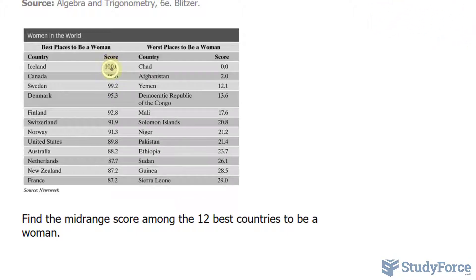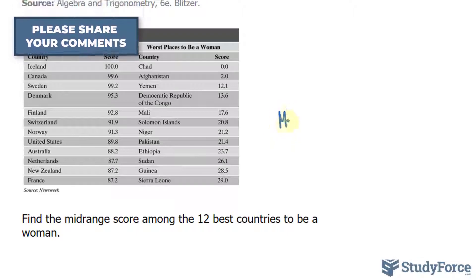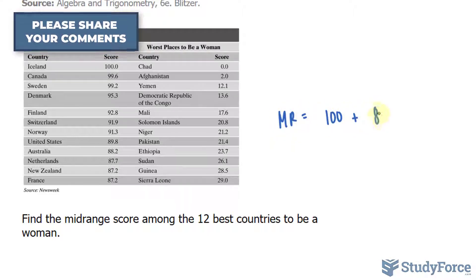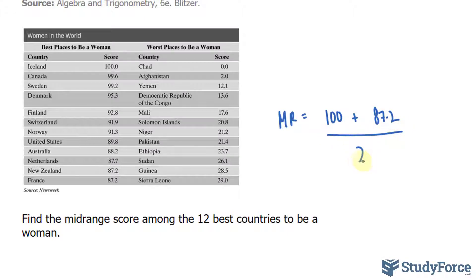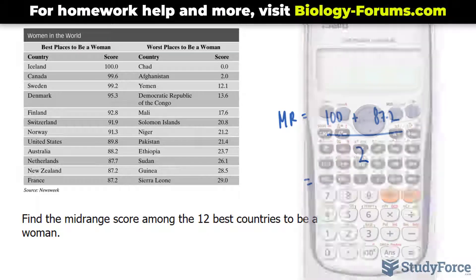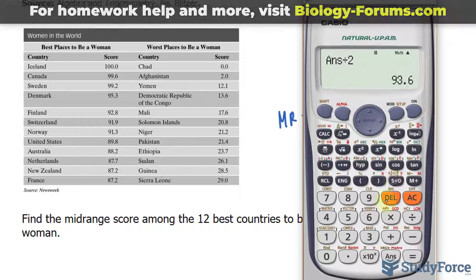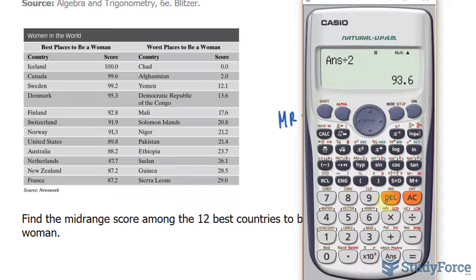What we will do is take the highest number, 100, and the lowest number, 87.2, add those two numbers up and divide by 2. So the midrange is equal to 100 plus 87.2, over 2. These numbers can be reversed — the answer doesn't change. Using our calculator, 100 plus 87.2 divided by 2 gives us a midrange of 93.6.